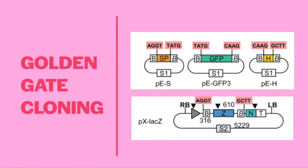In this image from the PLOS-1 Engler paper, you can see all of the components of the Golden Gate system. The researchers have built three entry clones. Each entry clone has a gene fragment of interest flanked by BSA1 sites. The entry clones are named PES, PE-GFP3, and PEH. The BSA1 recognition sites are indicated by the letter B, and the specific overhang associated with each BSA1 cleavage site is shown highlighted in pink. Not all of the overhangs are compatible with each other, but by design the overhangs have been engineered to align the fragments in a particular order.